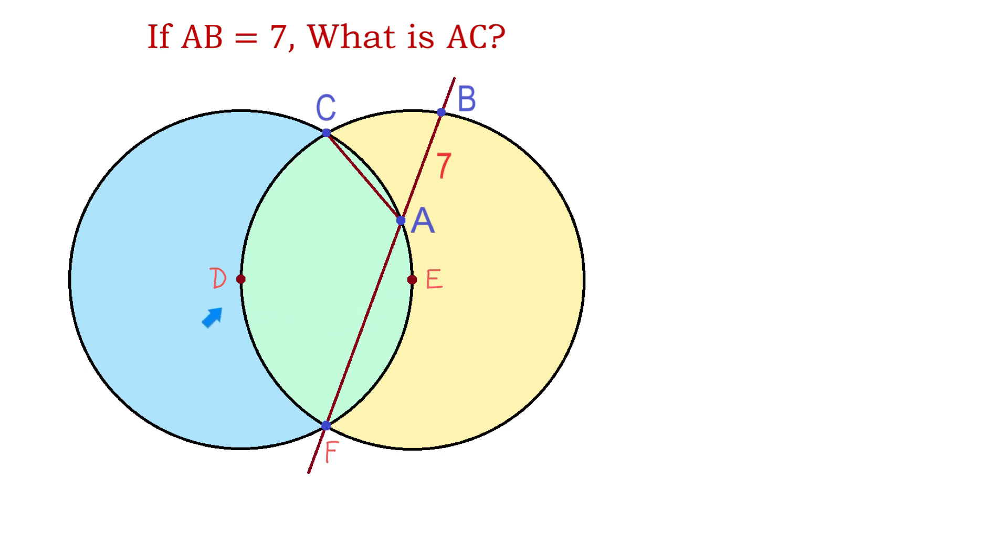So, the center of the blue circle is D and the center of the yellow circle is E. These two circles intersect at the points C and F.